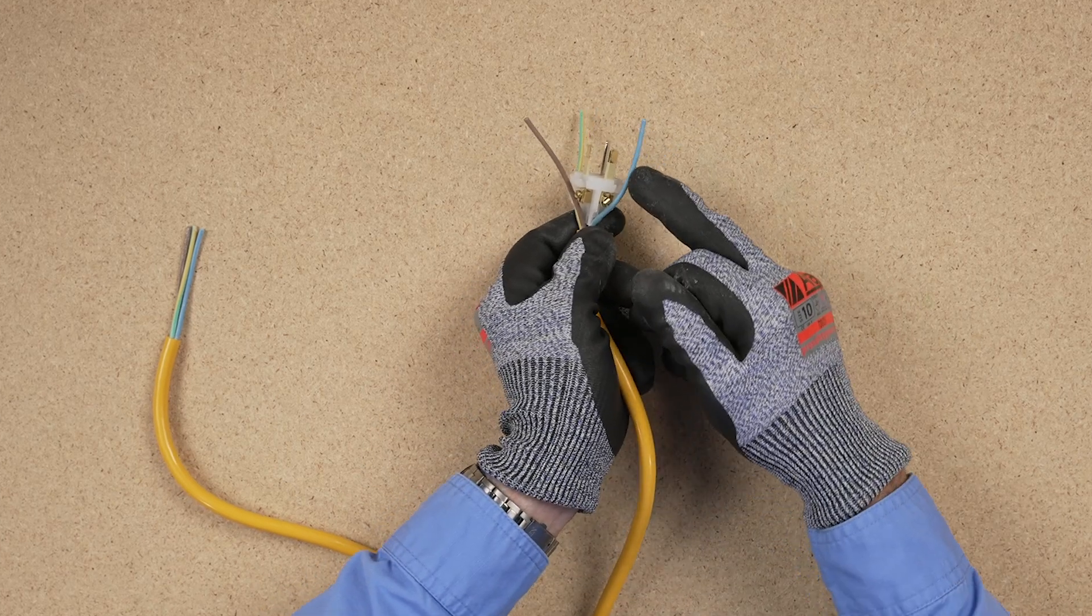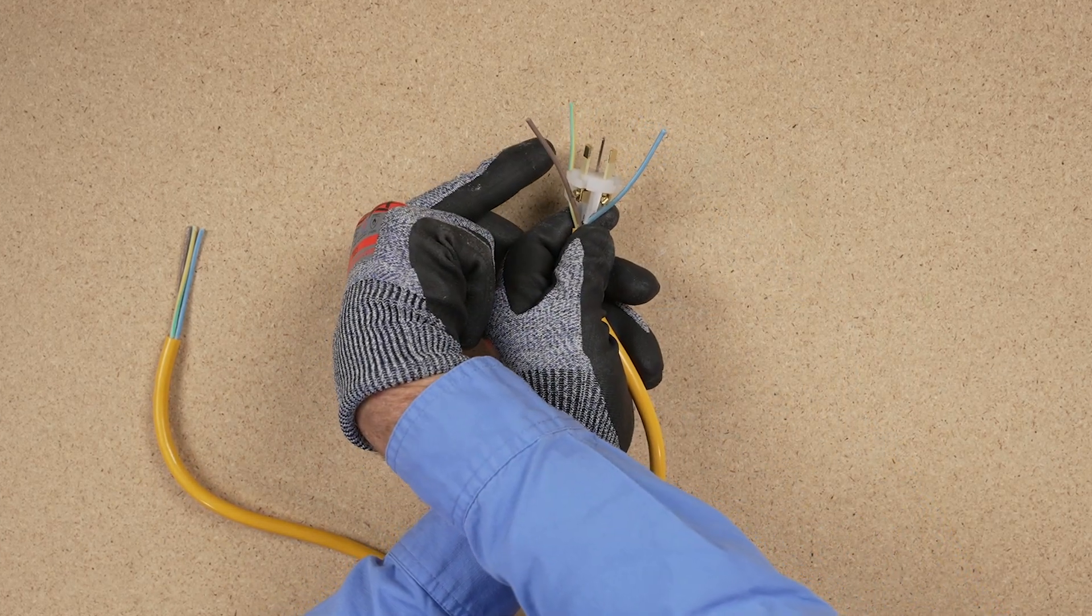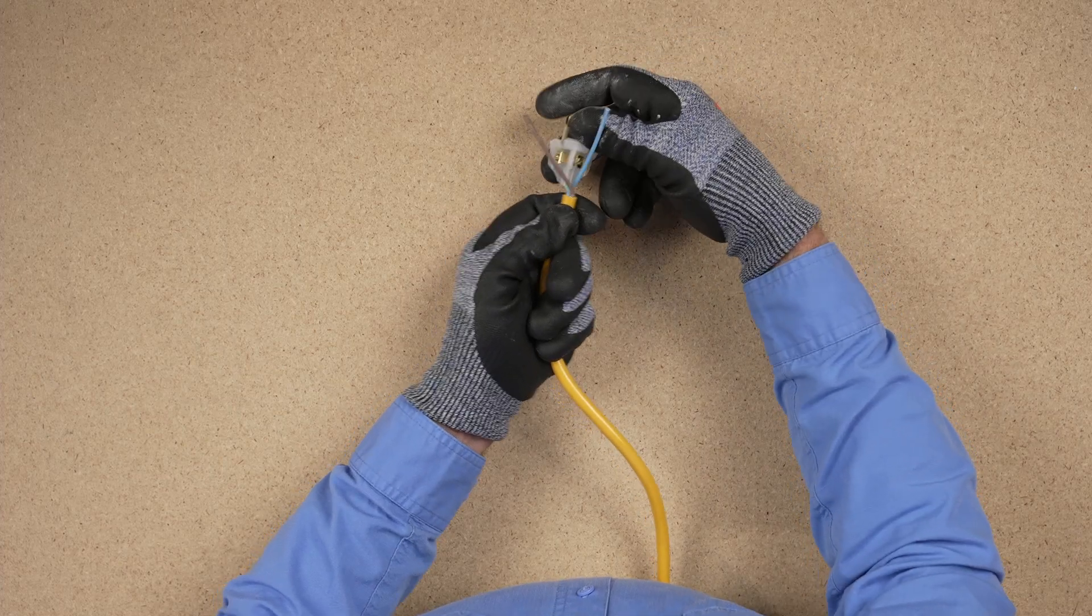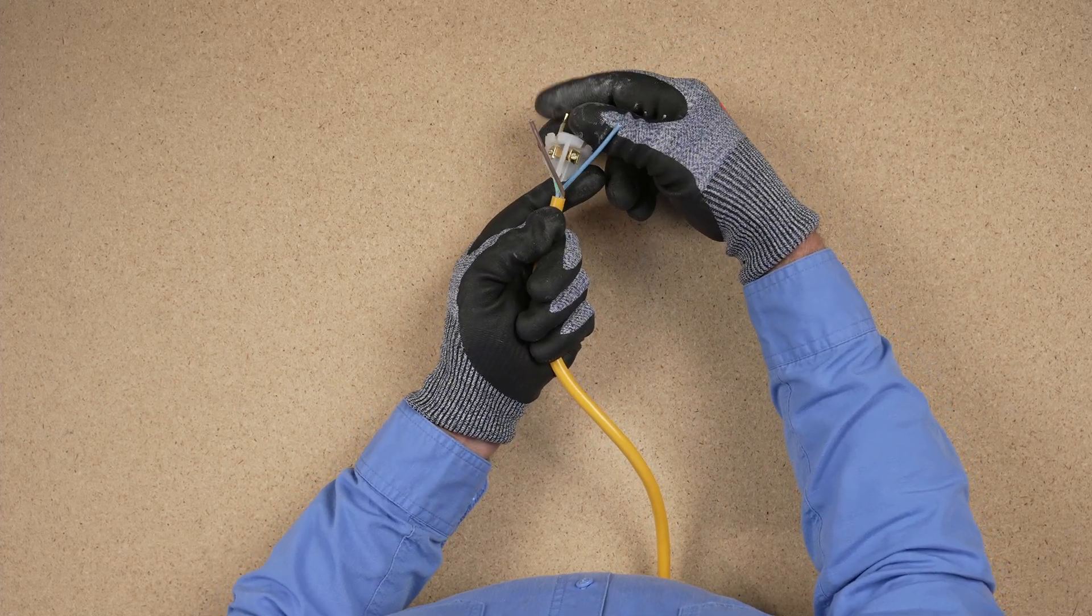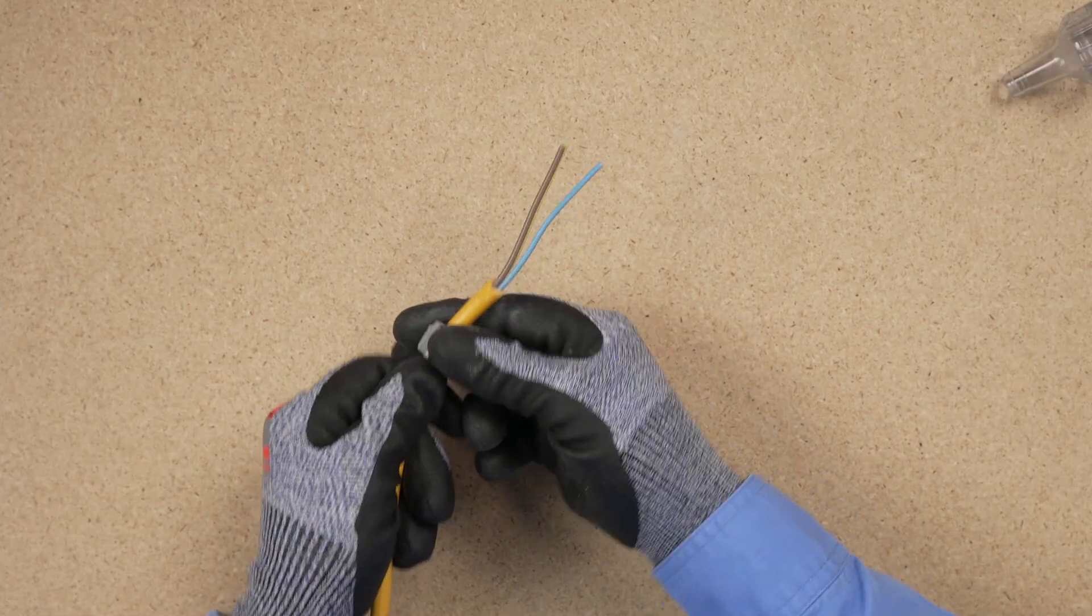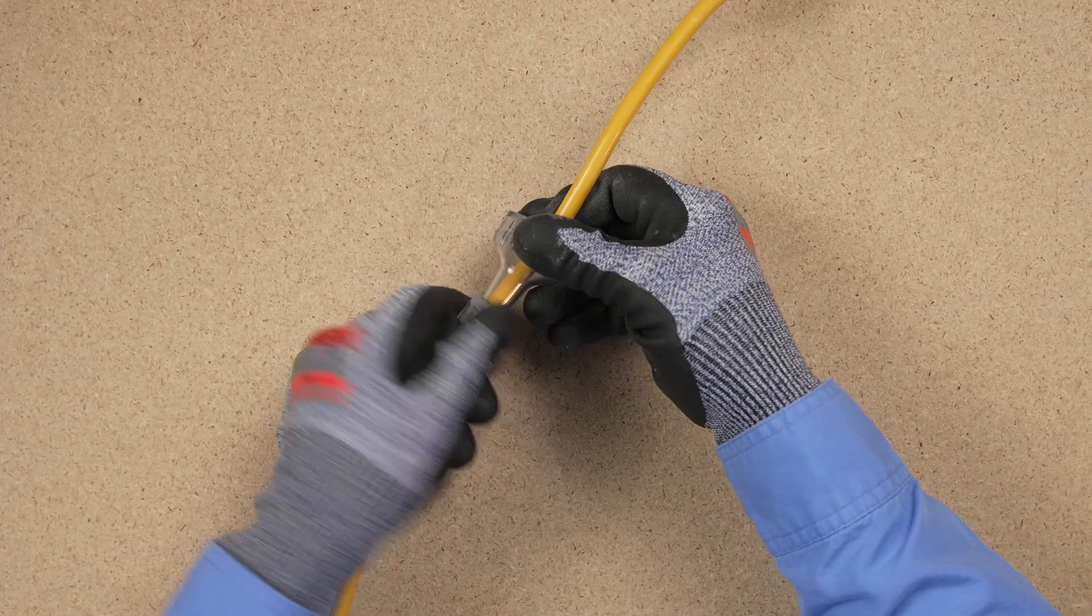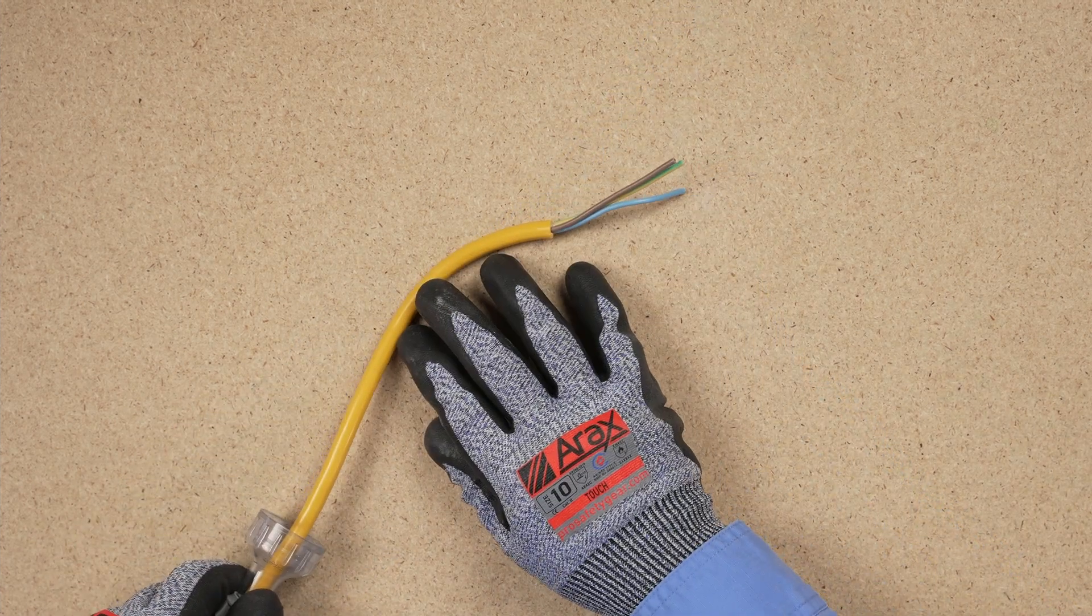Notice that the active and neutral conductors line up with the associated connections on the plug. Placing the plug on the opposite end of the cable will require the conductors to be crossed over to make correct connections. Once you identify the correct end of the cord, you need to place the cord clamps and shrouds for the plug and socket on it.